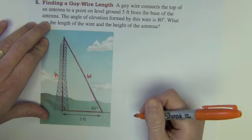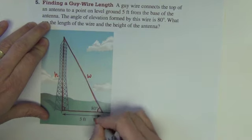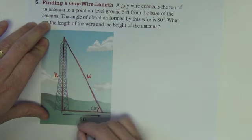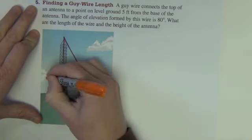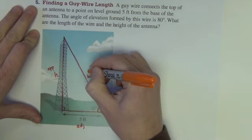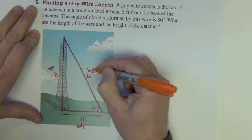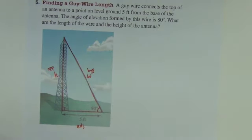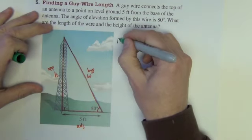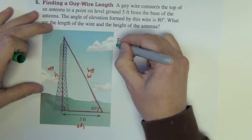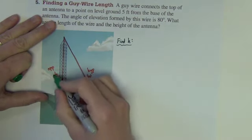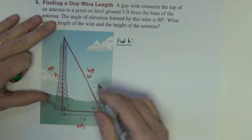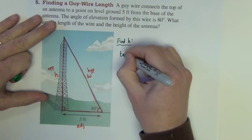We're after both the height of the tower and the length of the wire, just call that W. Okay, we're going to use this 80 degree angle. The five feet is the adjacent side. So I'm looking for both the opposite and the hypotenuse. So we'll have to do two problems to solve this one. So let's first find H. So I'm looking for opposite. I have adjacent. The trig function that uses opposite and adjacent is tangent.